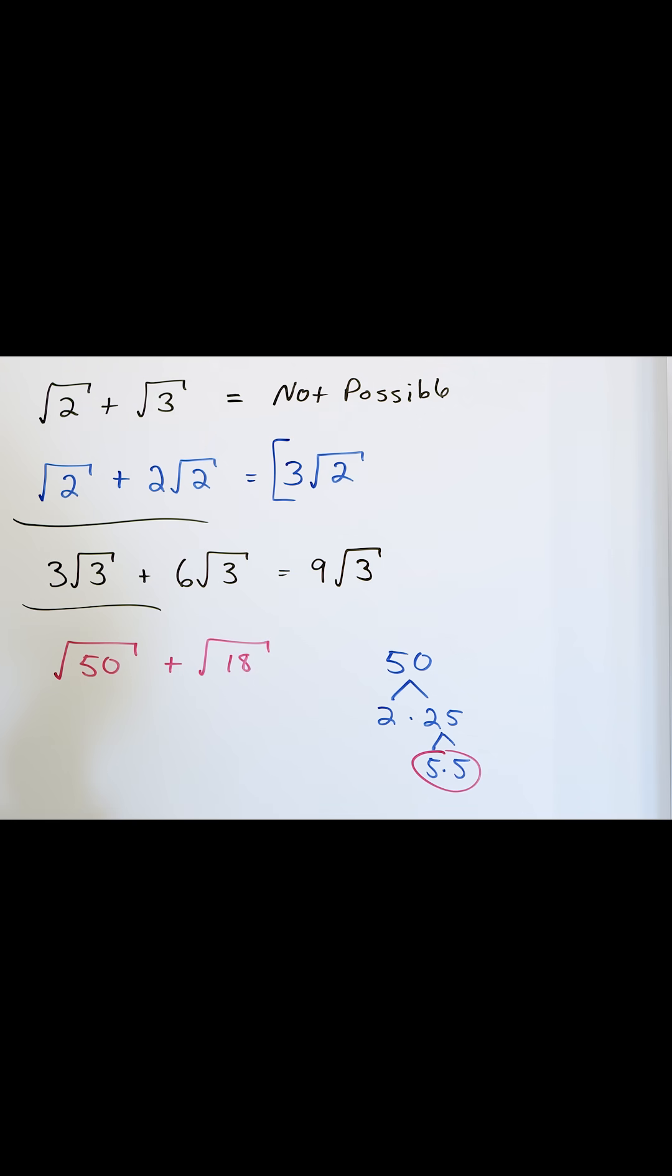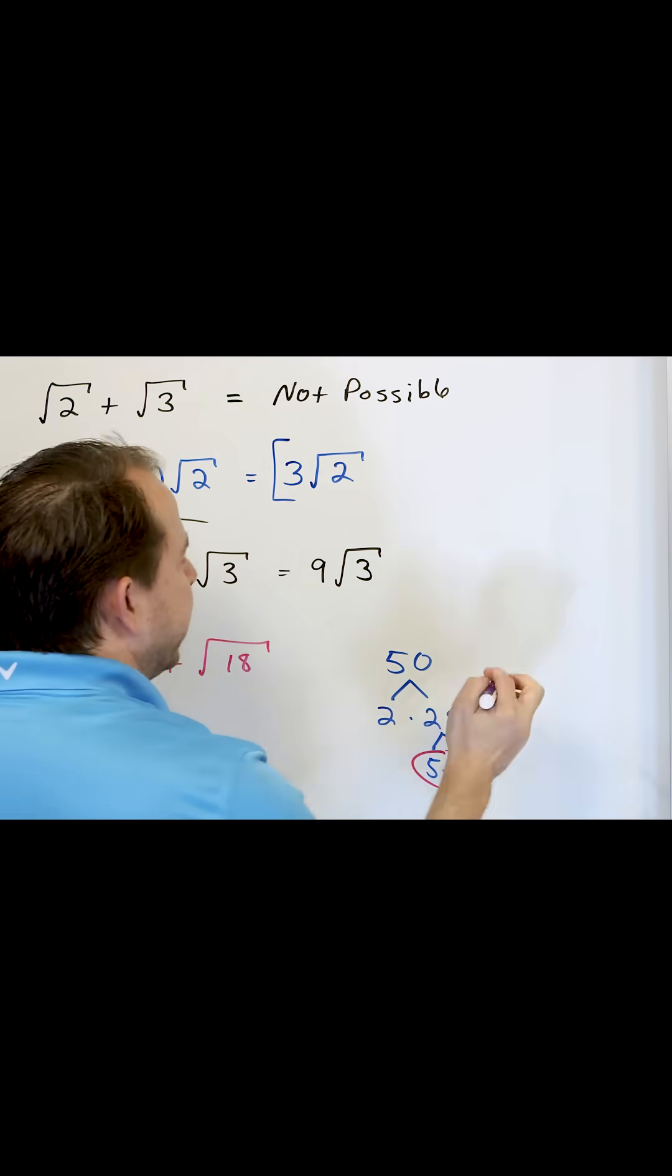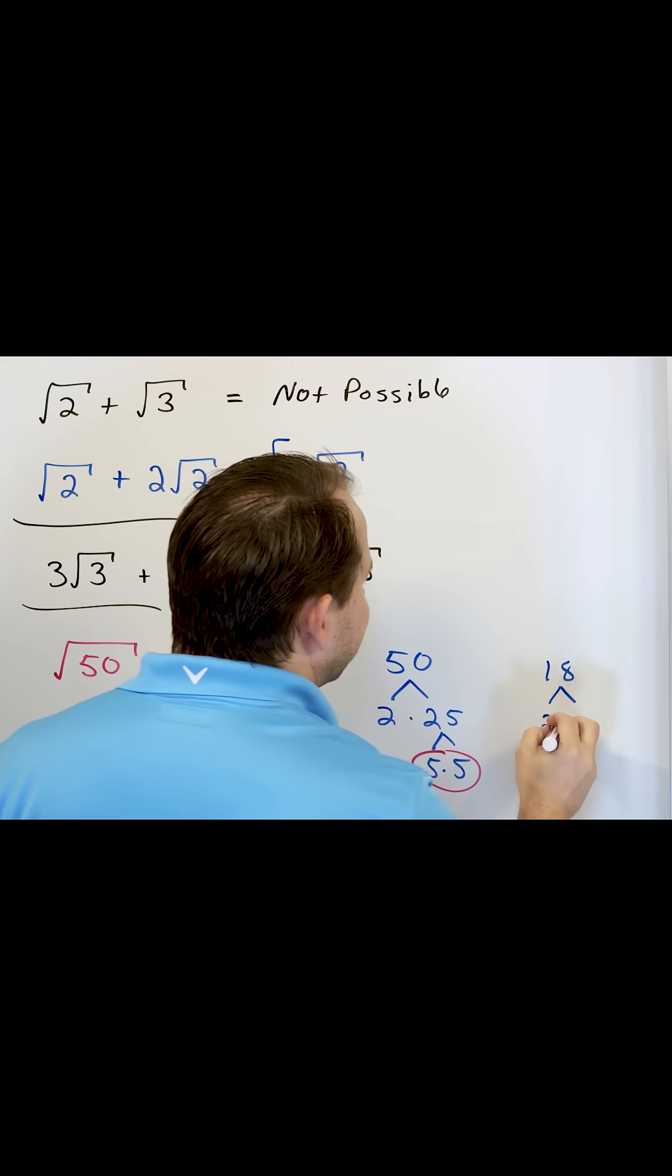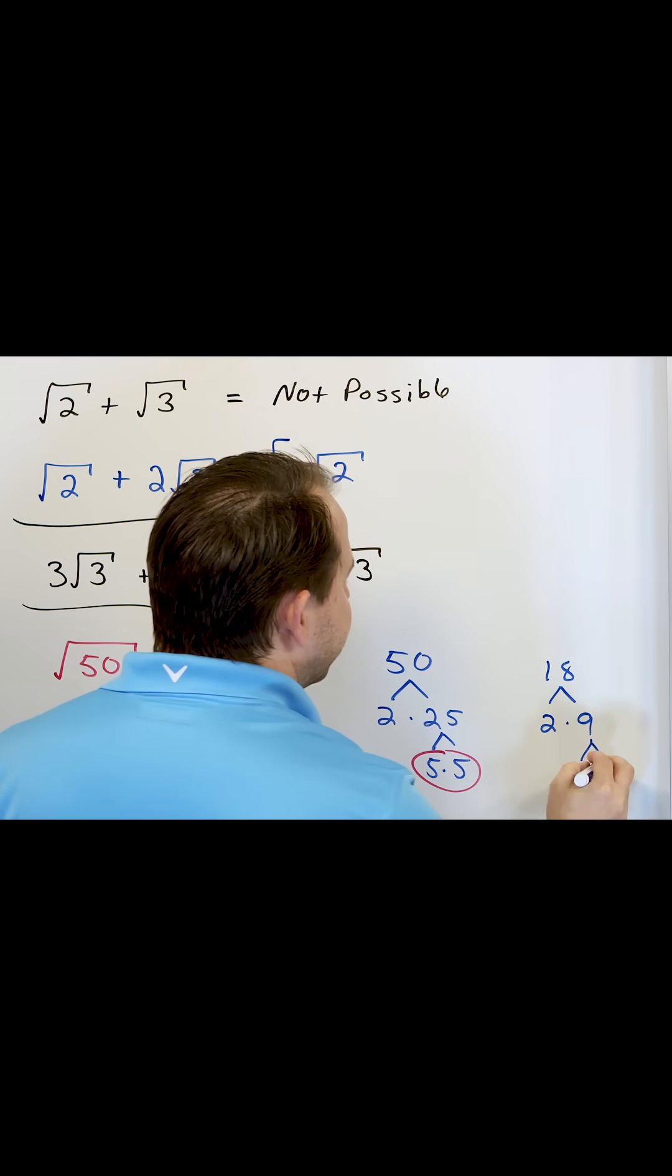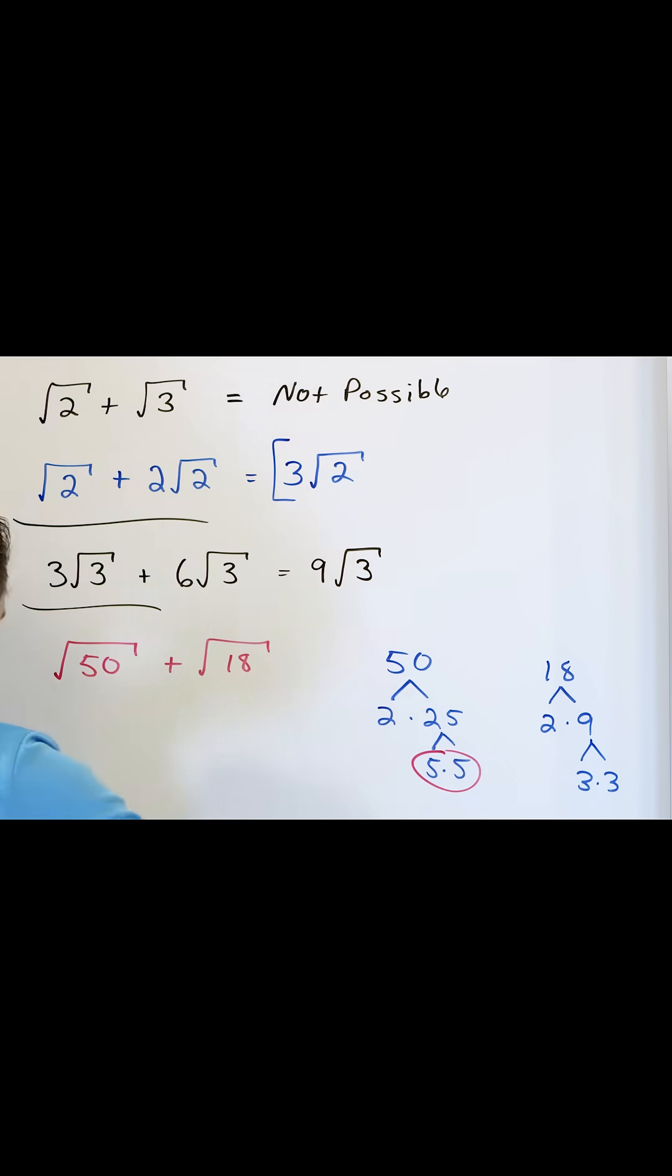All right, so we're going to hold that in our back pocket for a second. Let's go over here to 18 and see what we get. 18, 2 times 9 is 18, and I know that 9 is 3 times 3. So I have prime numbers all in the bottom there.